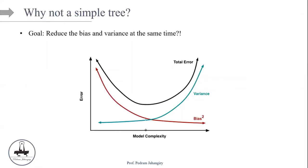Why not a simple tree? The goal is to reduce bias and variance at the same time, and the idea is: can we push the total error down even further? From our last class, we talked about starting with a very bushy tree — our initial tree, Decision Tree 1. We start with the very bushy tree because the bias is going to be small. But unfortunately, this very bushy tree is going to overfit in the training set and perform very poorly in the test set because it is overfitting.